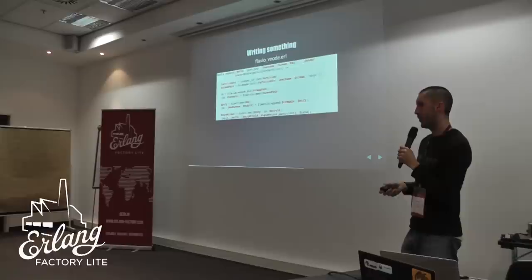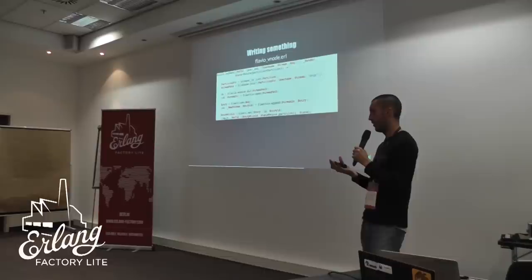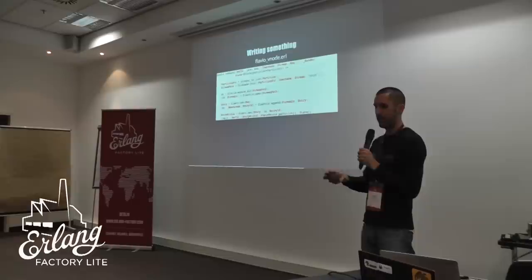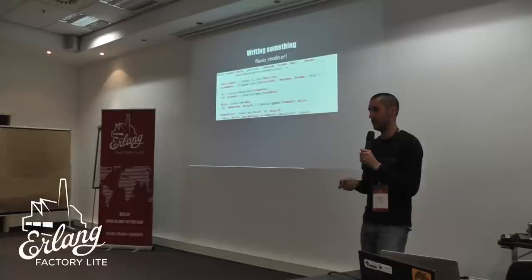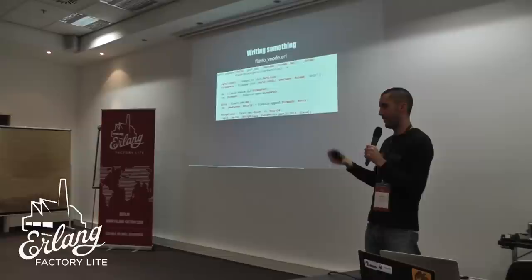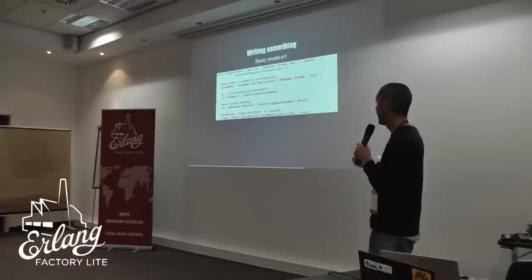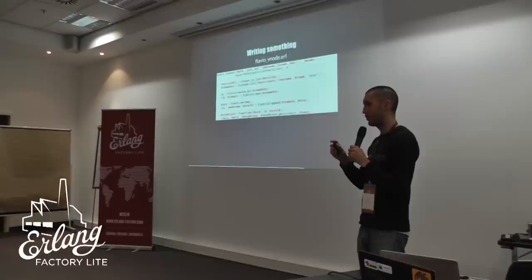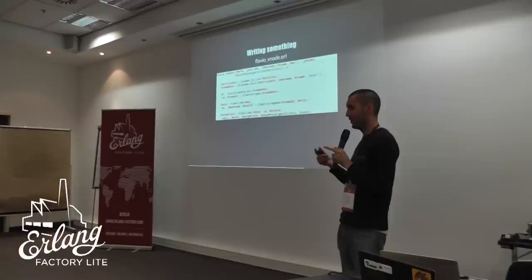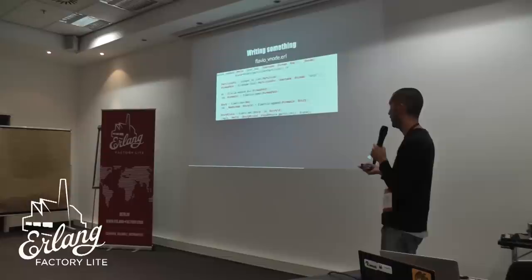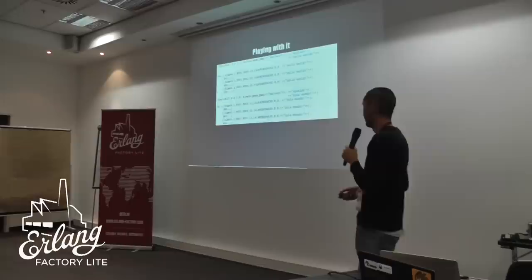We use the partition ID to build the directory tree because a given physical node will normally have more than one VNode. With a one-node cluster and 64 VNodes, all 64 VNodes run on your machine. With four real nodes you'll have 64 divided by 4. When writing, you have to ensure each VNode writes to a place prefixed with its own partition. Otherwise all VNodes on the same physical node write to the same place. It's easier to just prefix all directories with the partition ID.